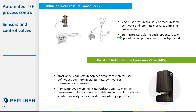Unique to our KR2i system is the Crossflow Automatic Back Pressure Valve, or ABV. TFF can only occur if transmembrane pressure, or TMP, is present across the membrane in use. The ABV can apply an external back pressure and monitor user-defined set points that have been optimized for your process, ensuring robust and repeatable operations. The ABV does this by continuously communicating with KFCOM and adjusting the pinch valve accordingly as solution viscosity changes through a process.